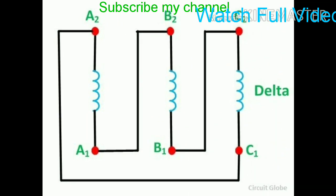Then we use the delta connection where the six terminals A2, B2, C2 and A1, B1, C1 are connected in delta.